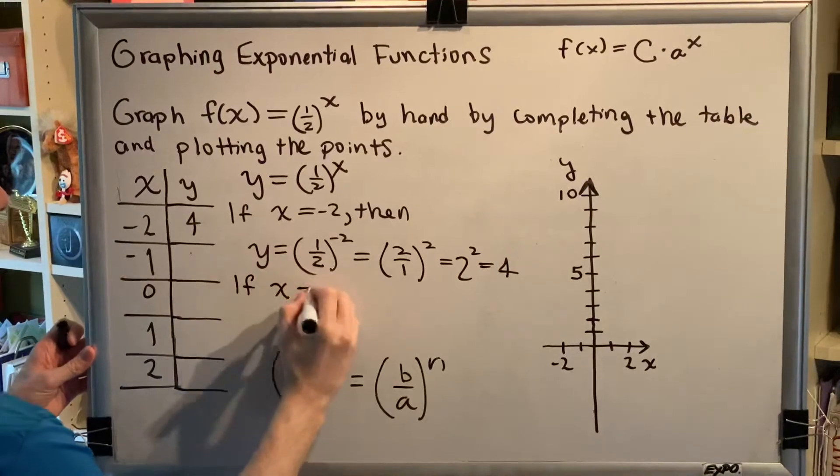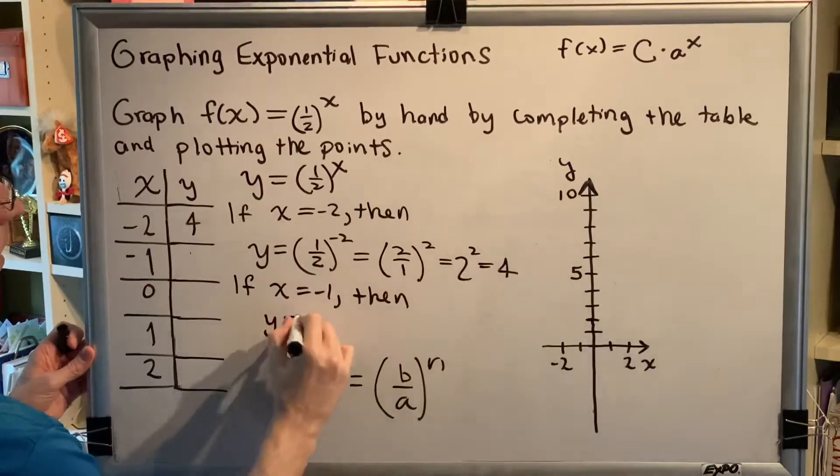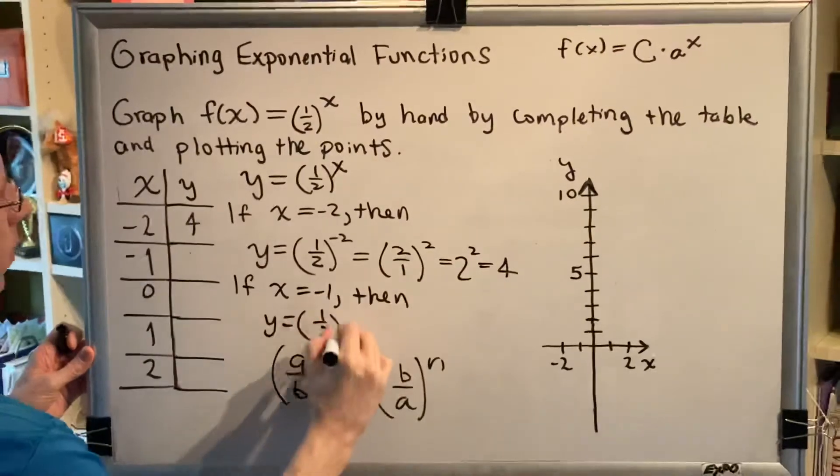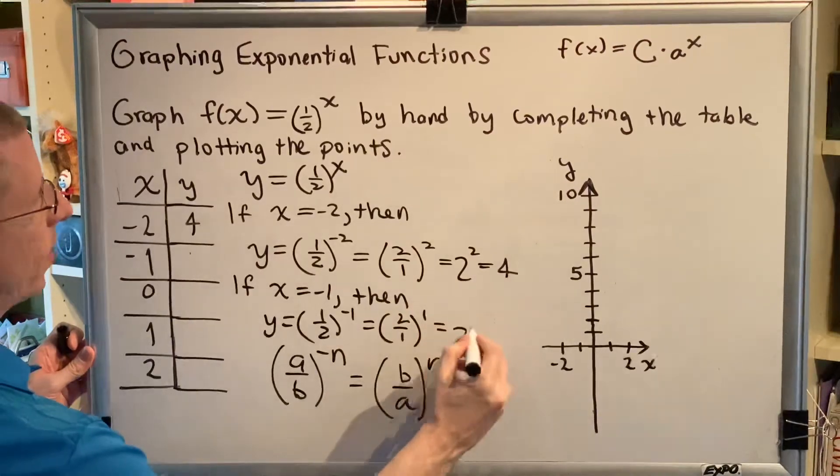Let's try another one. If x equals -1, then y = (1/2)^(-1), which is the same thing as (2/1)^1, which is 2.